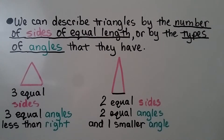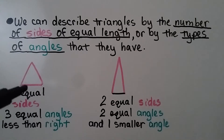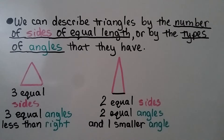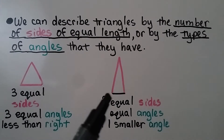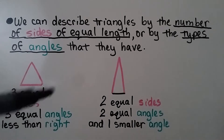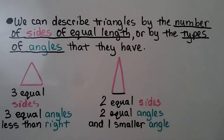We can describe triangles by the number of sides of equal length or by the types of angles that they have. This one has three equal sides and it also has three equal angles less than a right angle. This one has two equal sides and two equal angles, one down here and one down here, and one smaller angle up here.